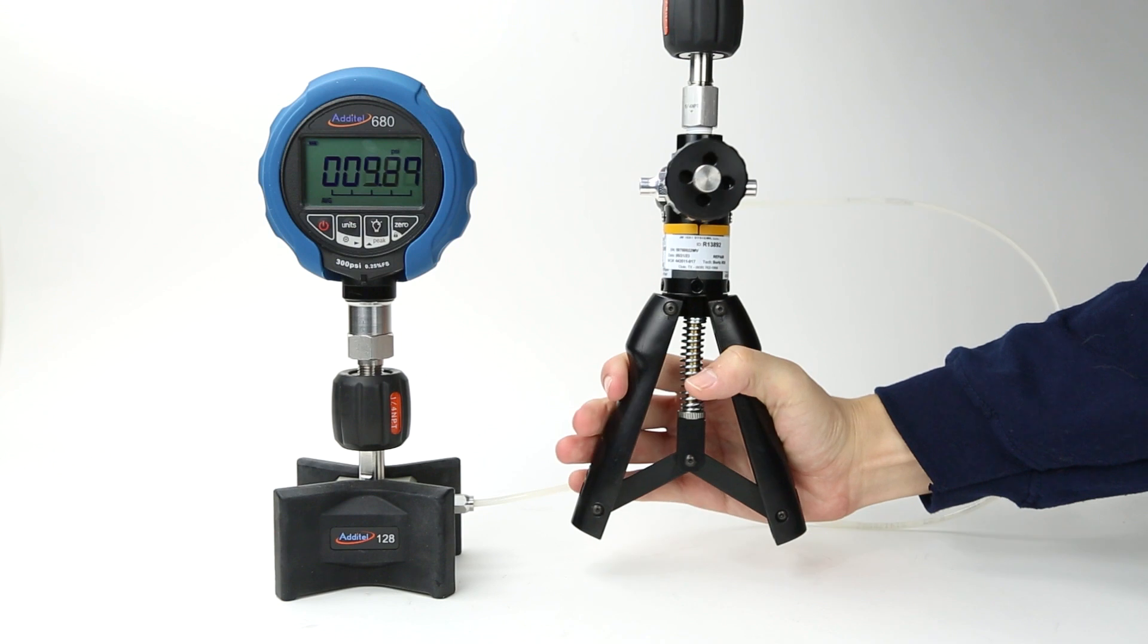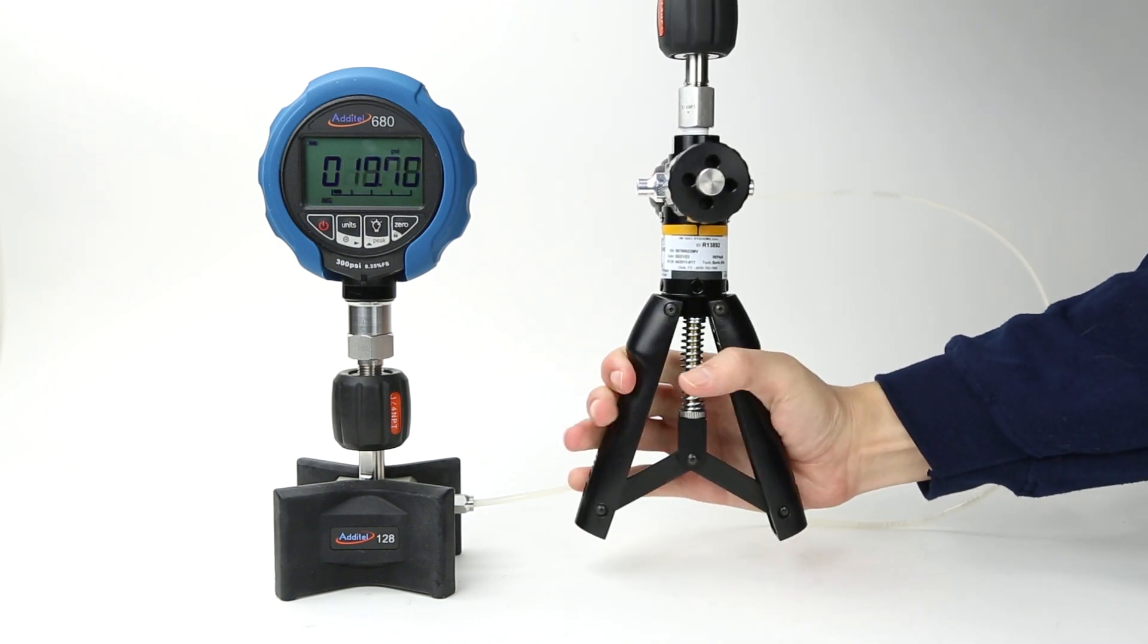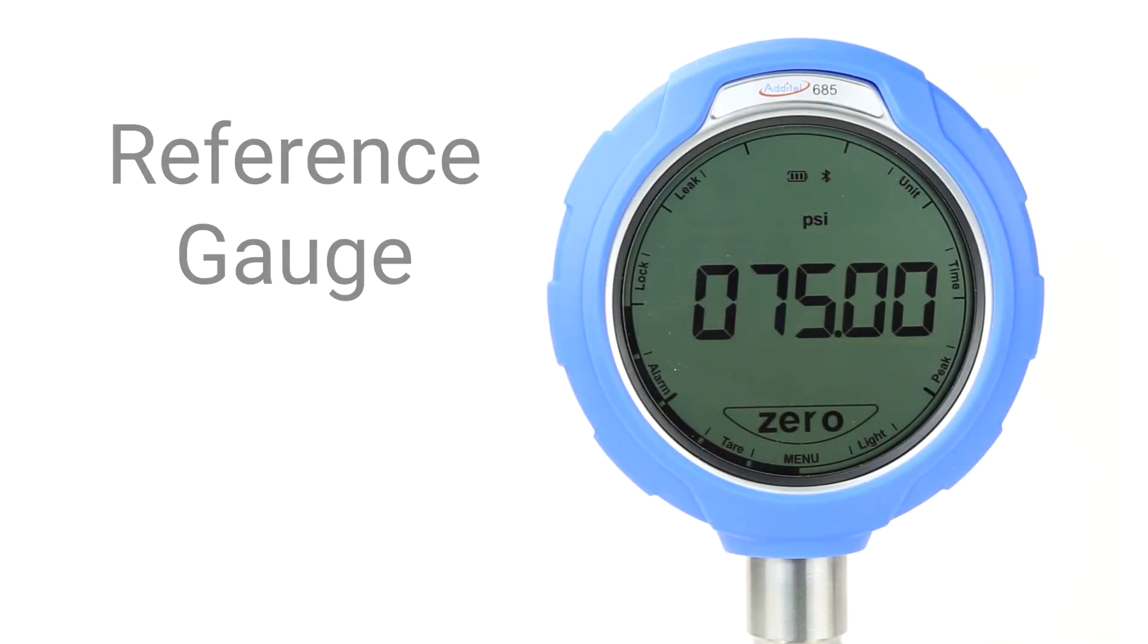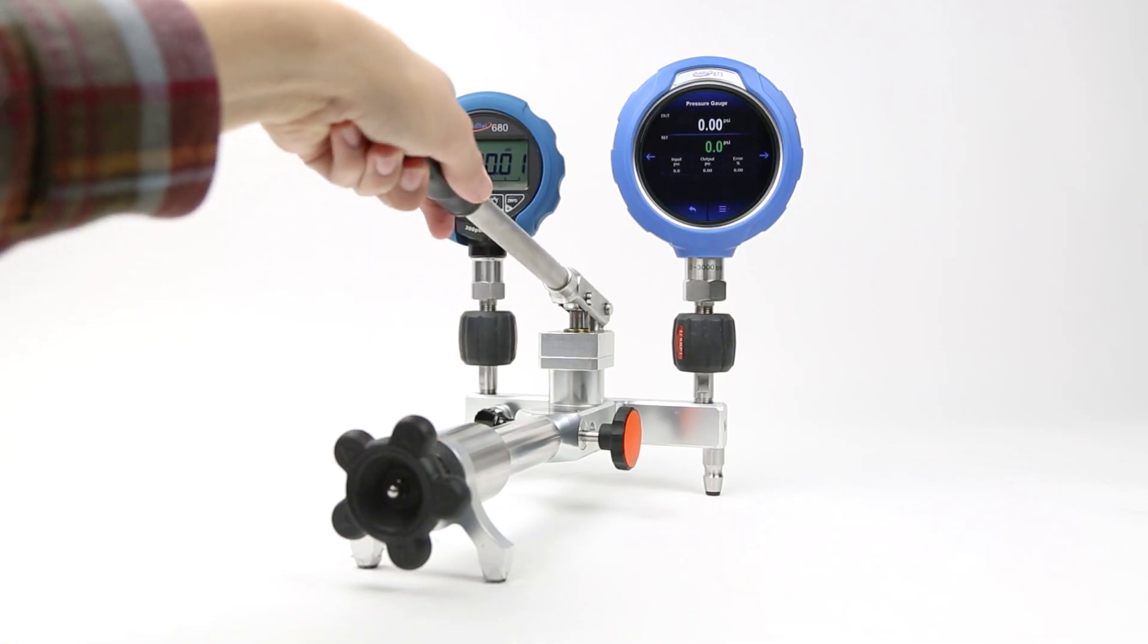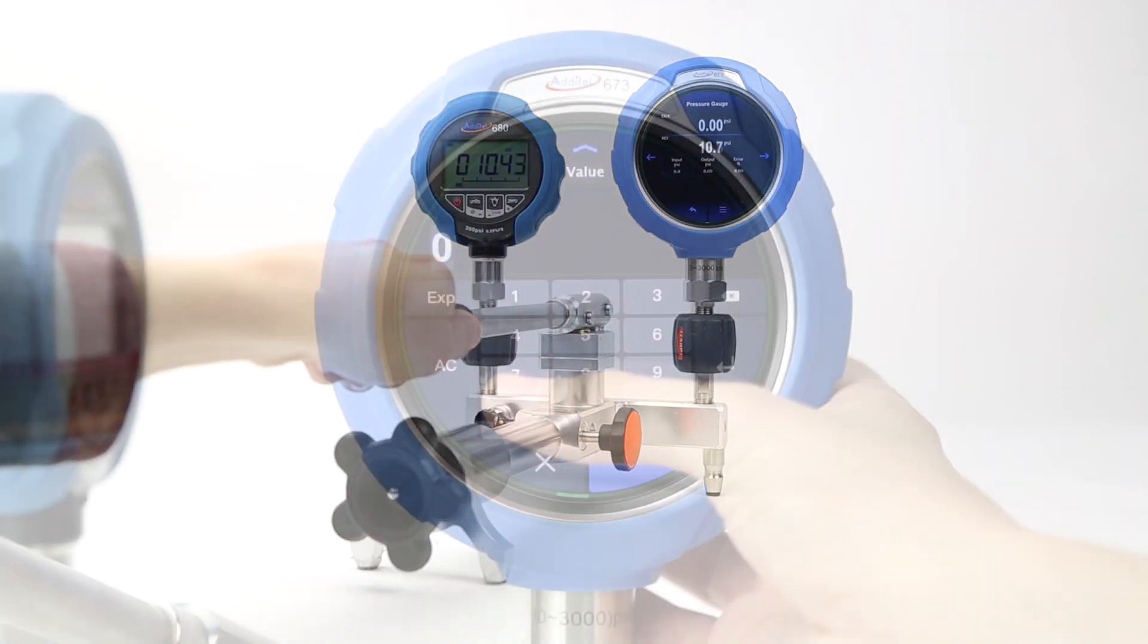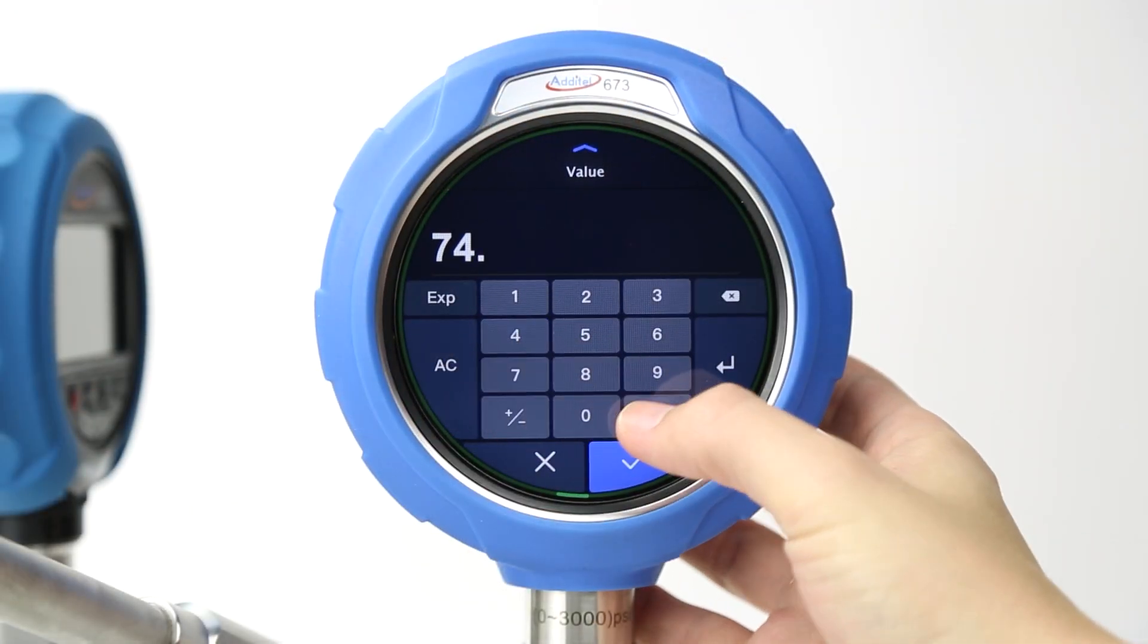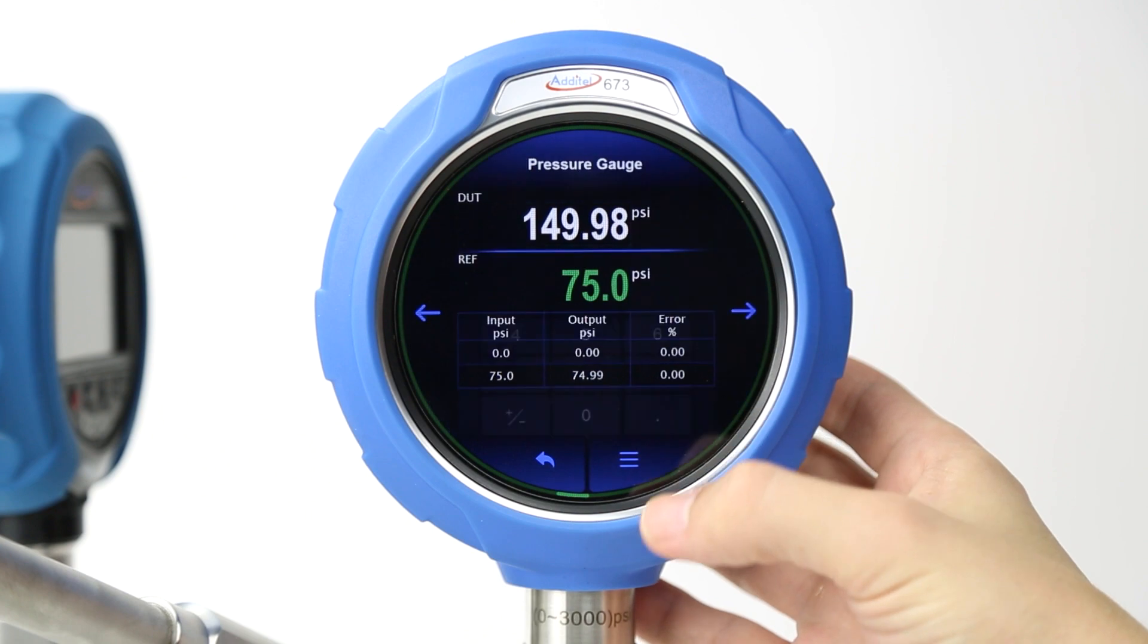To move to the next set point, Technician 1 will begin to generate pressure using the hand pump. Once they have a steady pressure, as shown on the reference gauge, they will write down the reading shown on the gauge under test. Technician 2 will use an Adytel pump to generate pressure, and enter the reading into the 673, which will record its own reference pressure automatically.